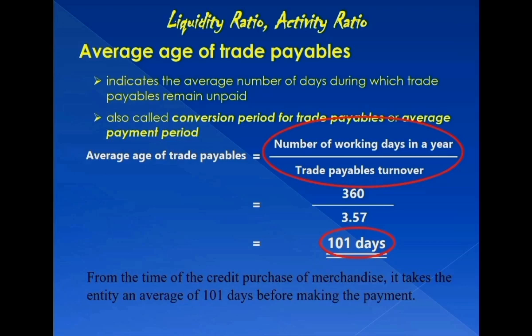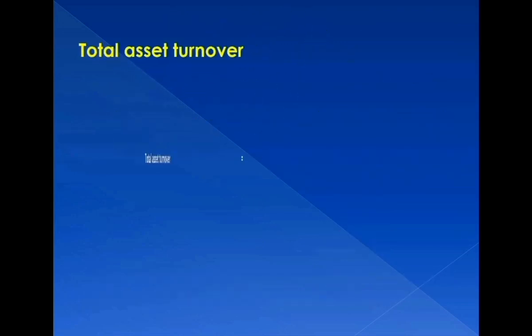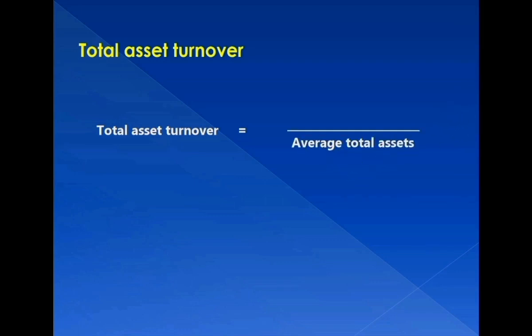The next ratio is total asset turnover. From the name of the ratio, we know the denominator must be total assets — specifically, the average total assets. As for the numerator, the assets of an entity are utilized to generate revenue or sales. Therefore, the numerator must be net sales. Let me remind you of the relationship: assets are used to produce revenue or generate sales.